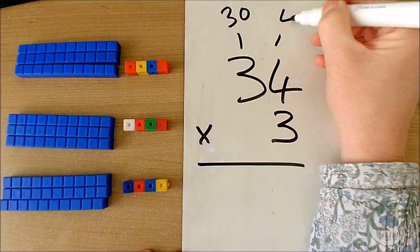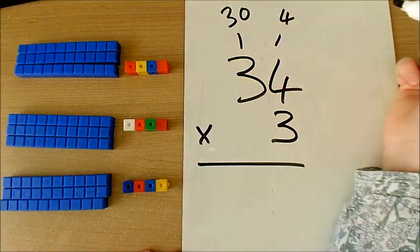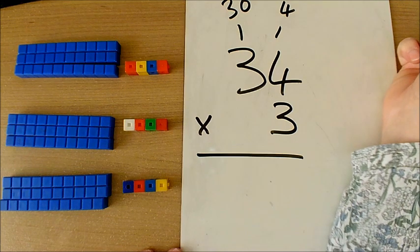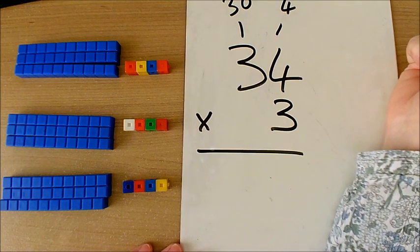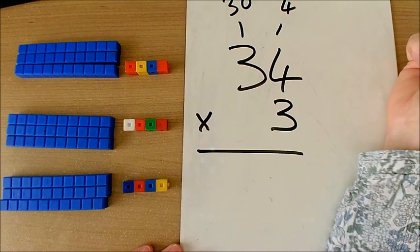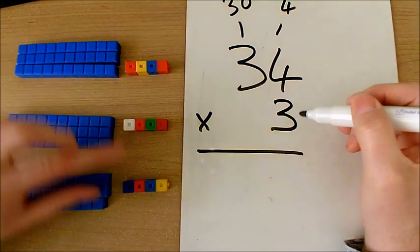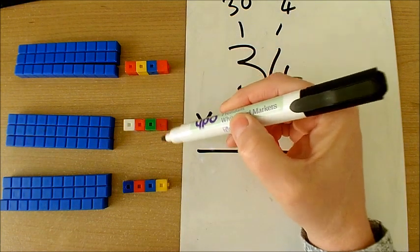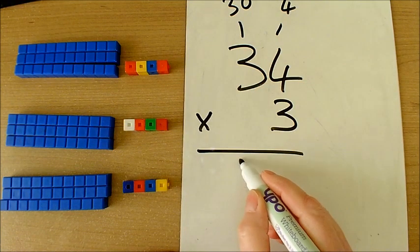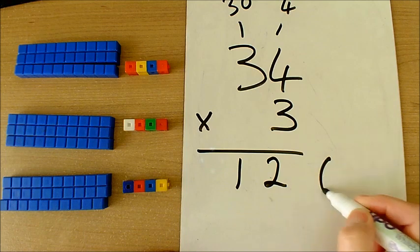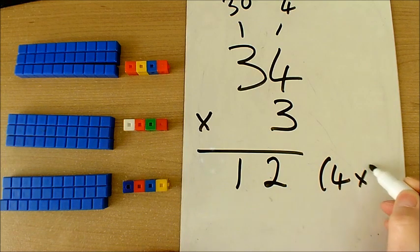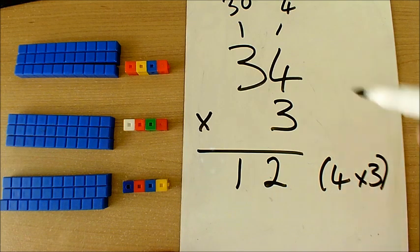I'm going to start with the ones, as it's always good practice to start with the ones for when you do future multiplications. So 4 times 3, also shown here, 4 times 3 is 12. I'm going to write this here, so that was my ones column.